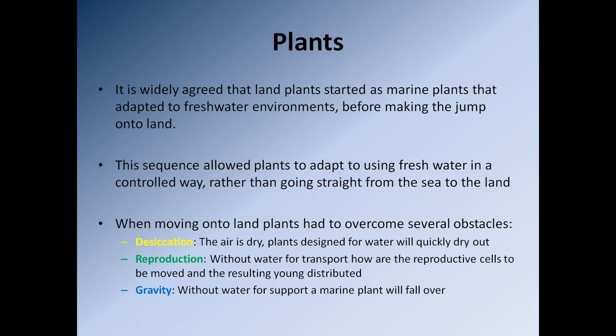The movement of plants onto land had to overcome several obstacles. The first is desiccation — if you're used to living in water, you don't need to worry about drying out. As soon as you get onto land, air is very dry compared to water, and any water-bearing plant will quickly dry out unless it can constantly replenish its water supply. The ability to both retain water and collect new water is very important.